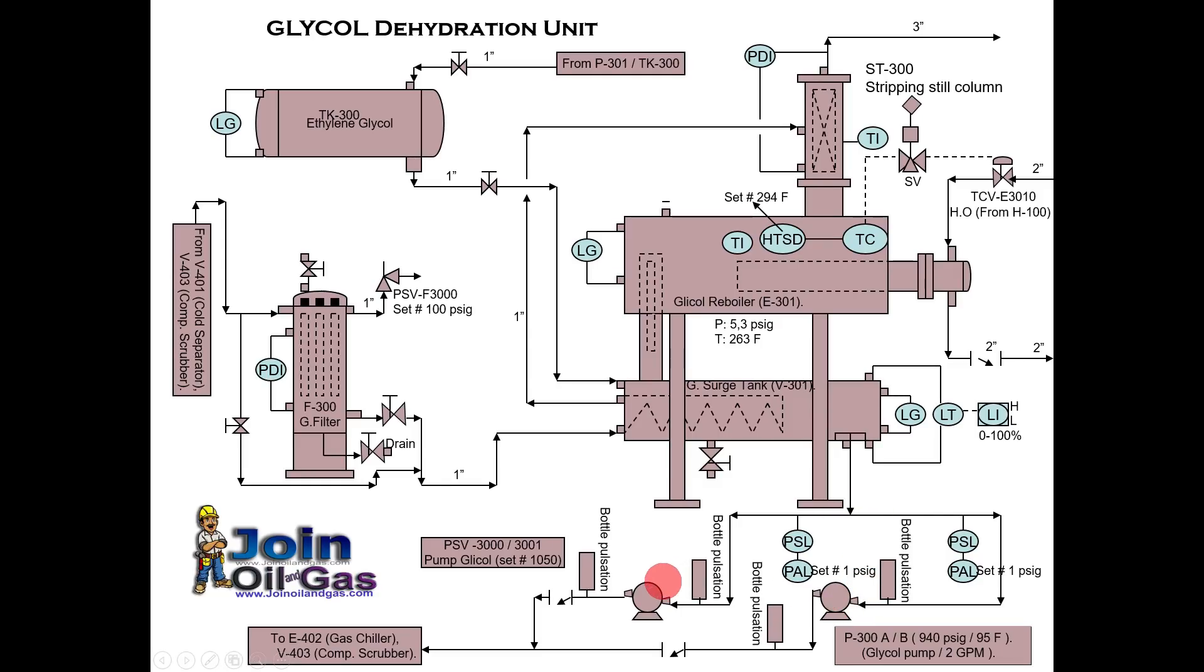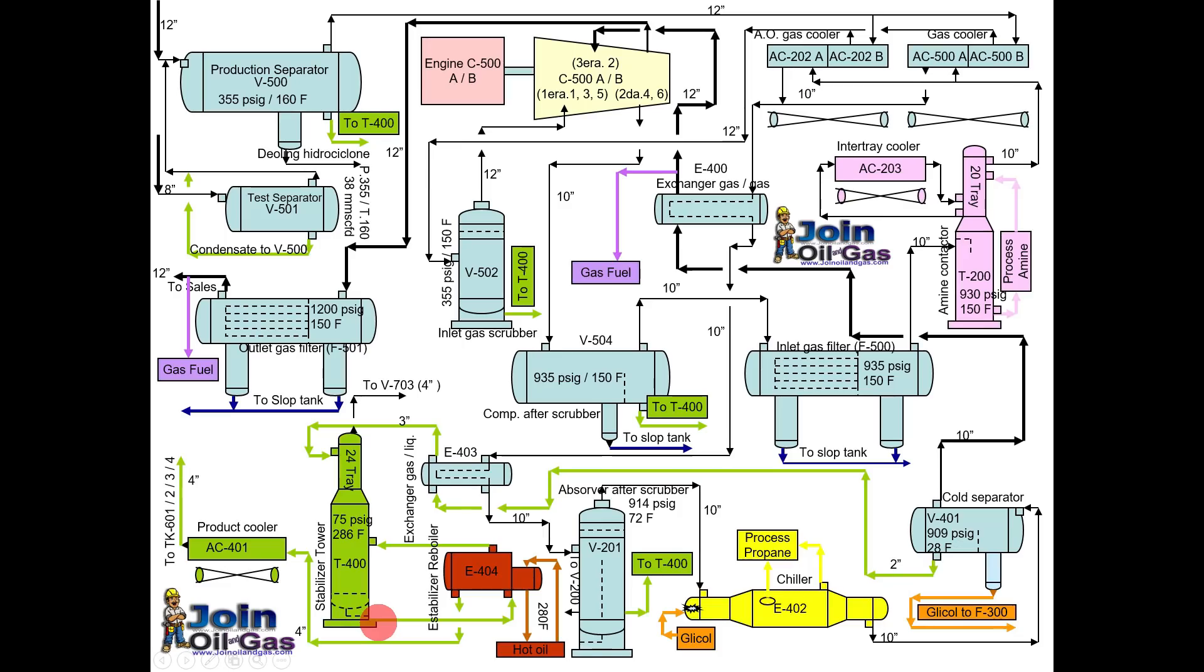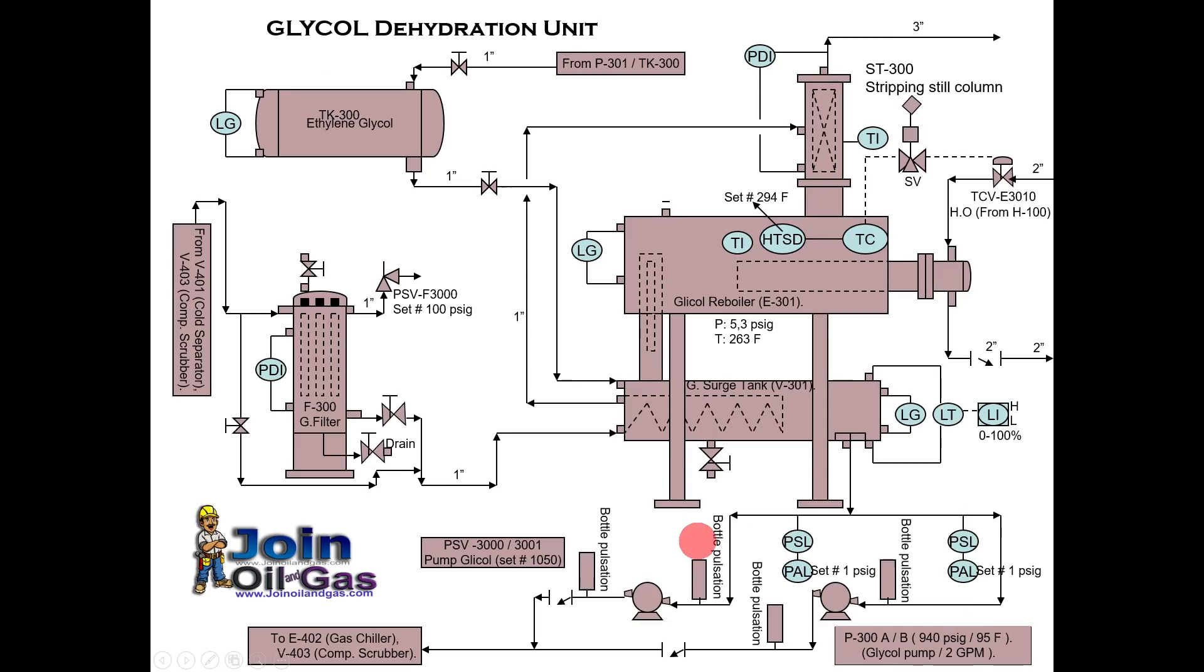Here we have two pumps, normally one is running and other is kept standby. And from here it is sent back again to the gas processing section and injected here, separated here, and sent back to the glycol dehydration unit. This is a closed cycle loop and it continues like that.